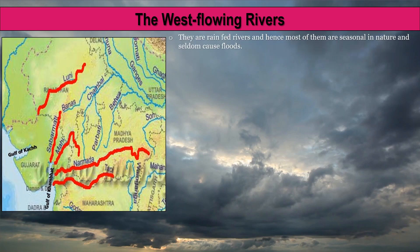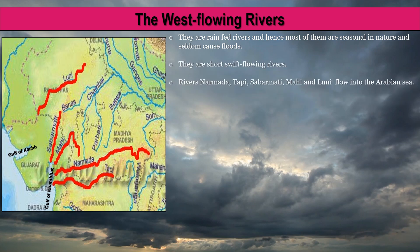The West Flowing Rivers are rain-fed and hence most of them are seasonal in nature and seldom cause floods. They are short, swift-flowing rivers. Rivers Narmada, Tapi, Sabarmati, Mahi and Luni flow into the Arabian Sea.